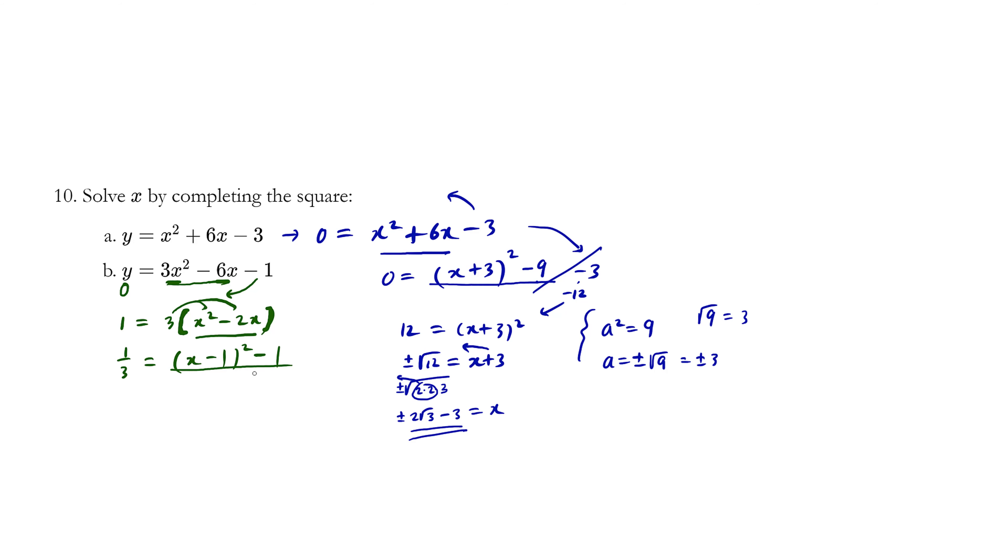So we're almost done. We just have to throw the negative term over. So this becomes 1 over 3, minus 1 becomes a plus 1, plus 1 becomes 3 over 3. We want to have a common denominator. Is equals to x minus 1 squared.